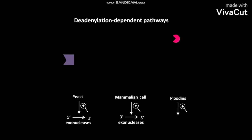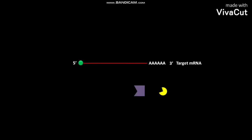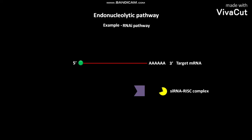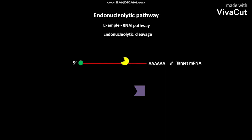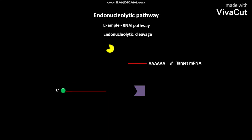P-bodies contain the decapping enzymes and 5' to 3' exonucleases. The third pathway for mRNA degradation in eukaryotic cells is the endonucleolytic pathway. One example is the RNAi pathway, in which each siRNA-RISC complex binds to the target mRNA and causes endonucleolytic cleavage, forming mRNA fragments. The mRNA fragments are then exposed to cytoplasmic exosomes, which contain 3' to 5' exonucleases.